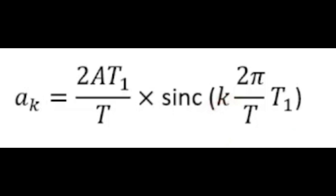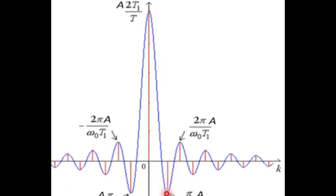As a result, we get the general solution for the Fourier series coefficient, which we can then utilize to graph the frequency content of a square wave. Setting k to various whole numbers, we obtain the frequency, or harmonics, that make up a square wave.